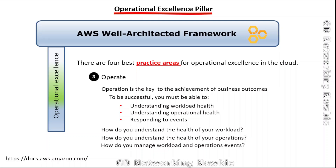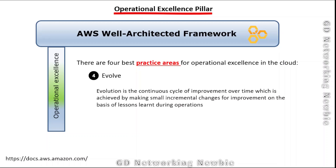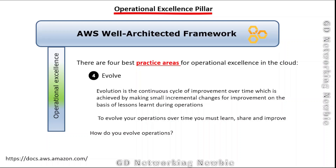The fourth best practice area is evolve. Evolution is a continuous cycle of improvement, achieved by making small incremental changes based on lessons learned during operations. The system needs to evolve as per our experiences and lessons learned. To evolve your operations over time, you must learn, share, and improve. The foundational question is: How do you evolve operations?